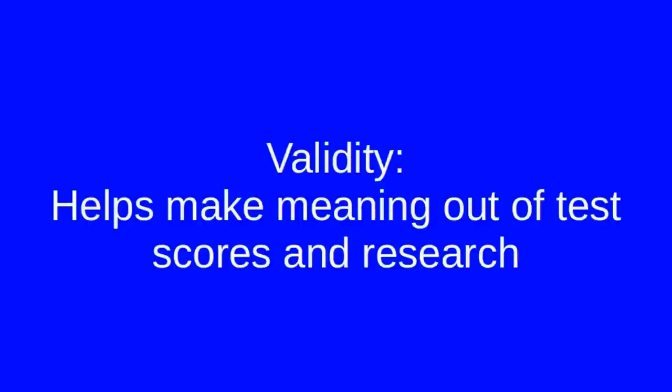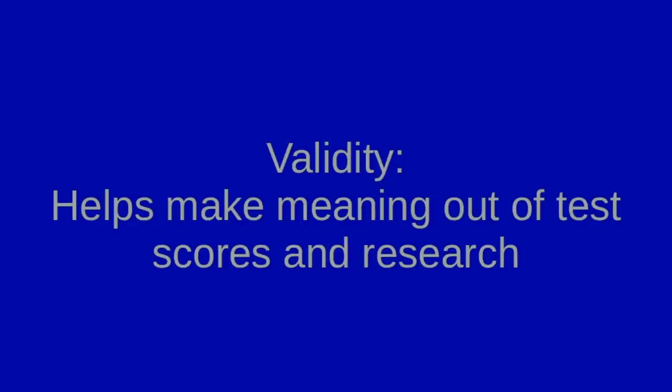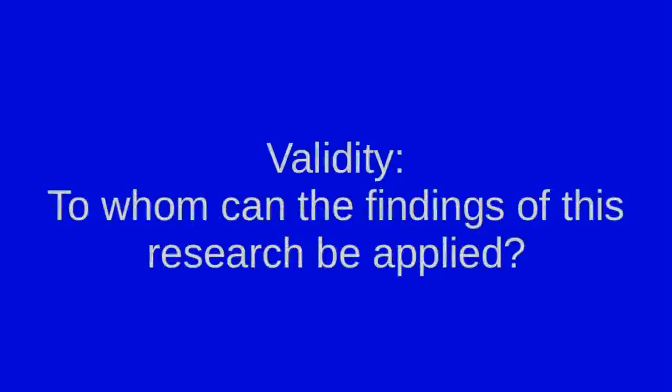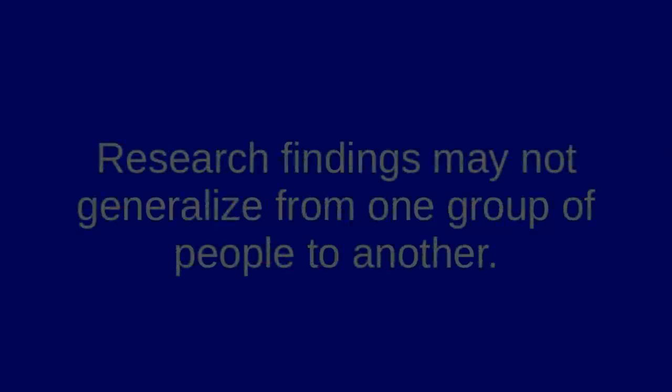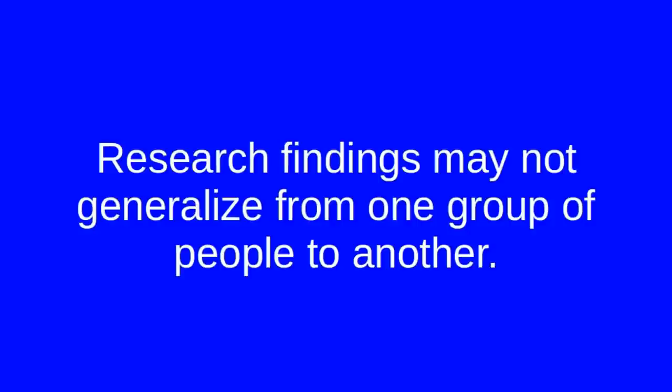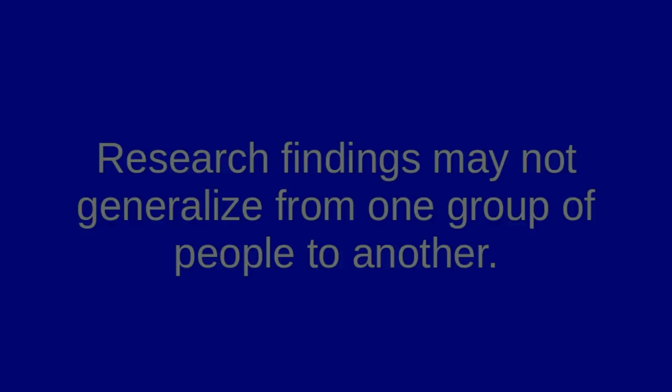Validity helps us to make meaning out of scores and research. Validity can help us to understand if a study can be applied to a specific population. For example, if I'm seeing a counseling client who is a 30-year-old female with depression, I might look at some research on how to treat depression. The research that I find may or may not be applicable to the client I'm seeing, and one type of validity, external validity, can help me make an informed choice about how to work with my client.